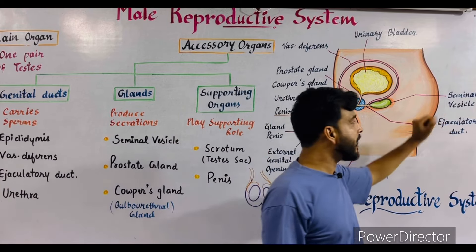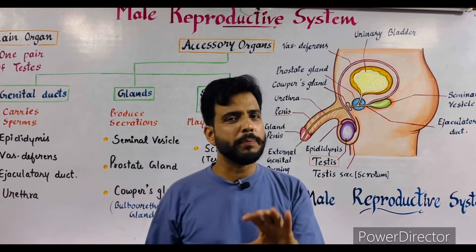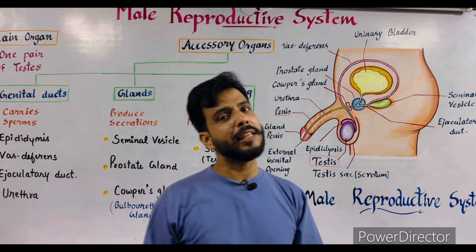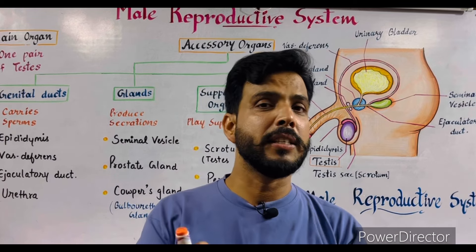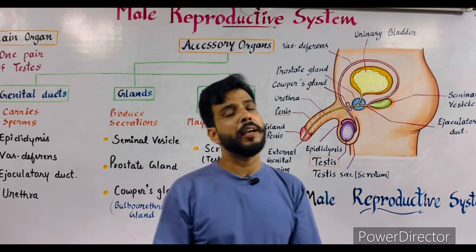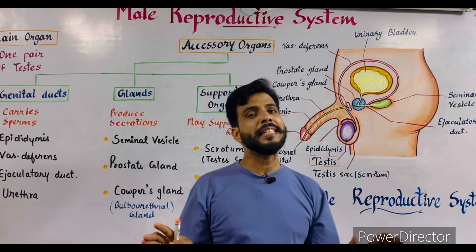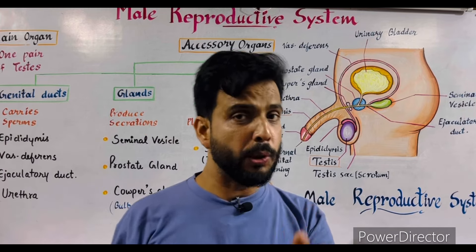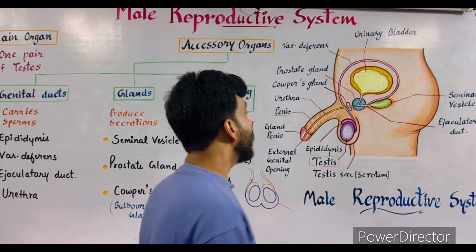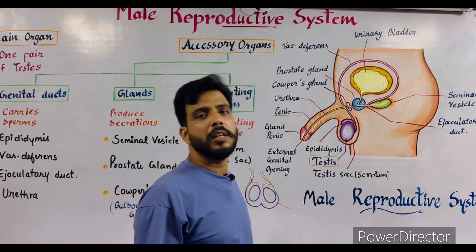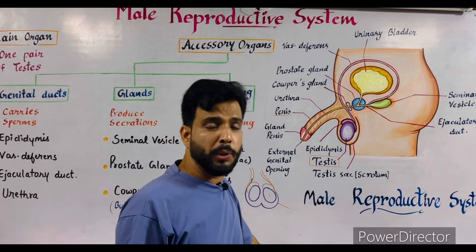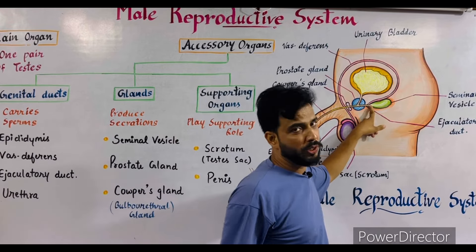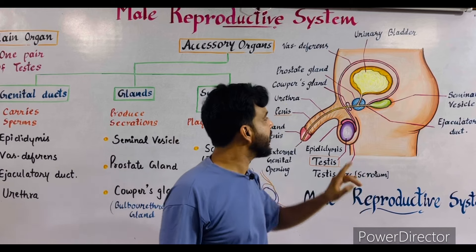The seminal vesicle is a bag-like structure about 5 centimeters long. It produces an alkaline substance known as semen. The sperms mix with semen and help in the process of reproduction. However, the complete semen is not produced by the seminal vesicle alone — only 75 percent of semen is produced by the seminal vesicle. This white-colored alkaline liquid mixes with sperm and helps in reproduction.